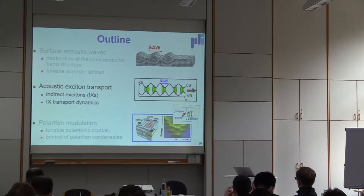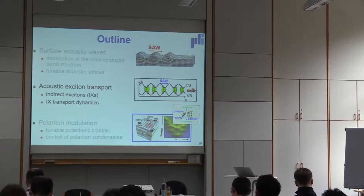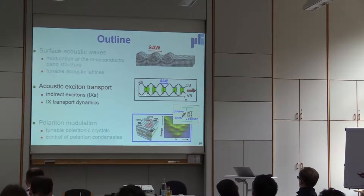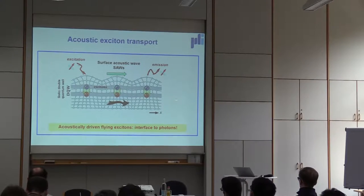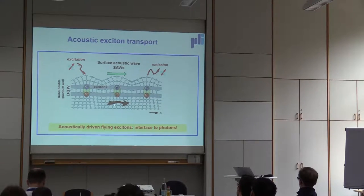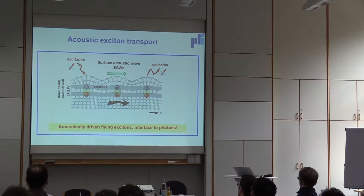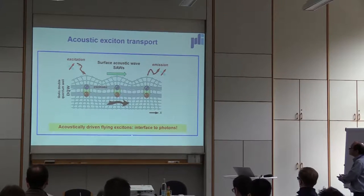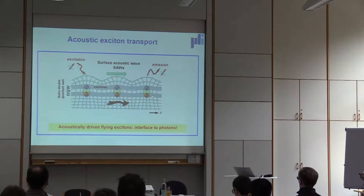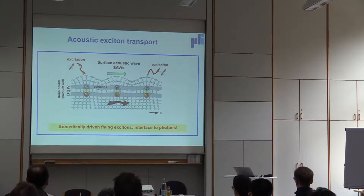Let me start with excitons. Excitons are electron-hole pairs coupled by the Coulomb interaction — a bound state of an electron and a hole. We would like to use acoustic waves to transport and manipulate these excitons, creating with excitons an analog to electrons: instead of transporting just electrons, we transport the electron and hole together. The reason for doing this is that excitons give us a very good interface to photons — we can transport the excitons and then send them away in the form of photons, exploring the direct conversion between excitons and photons.